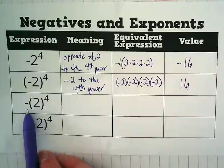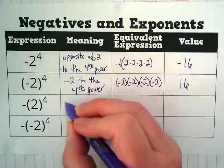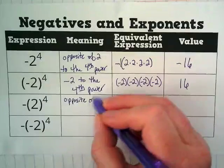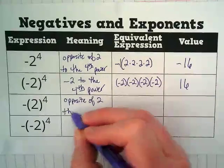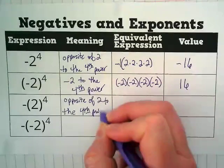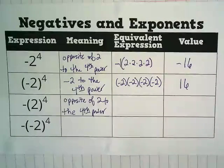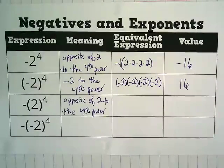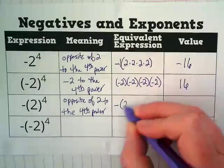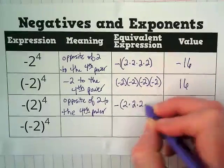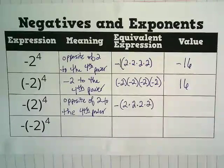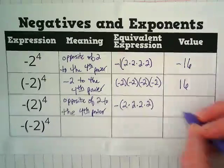When we have negative in front of the parentheses and the 2 is raised to the fourth power, the meaning is opposite of 2 to the fourth power. And it looks just like the first one when we do an equivalent expression. Negative outside of parentheses, all positive 2s on the inside, and we get a negative 16.